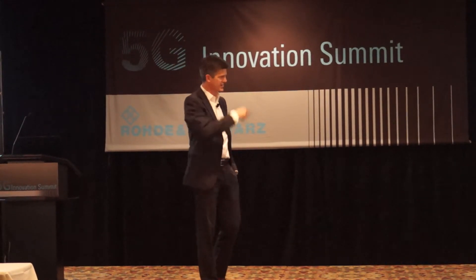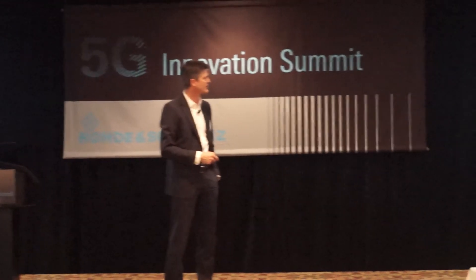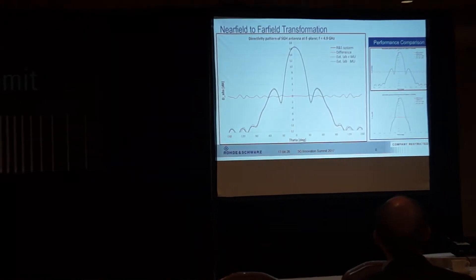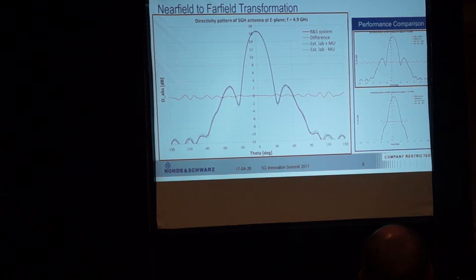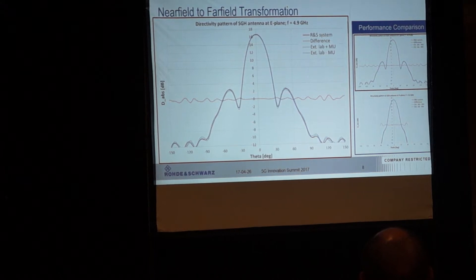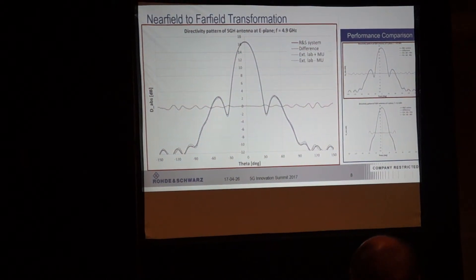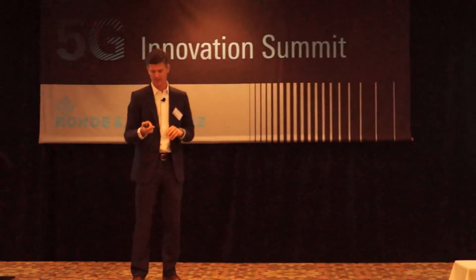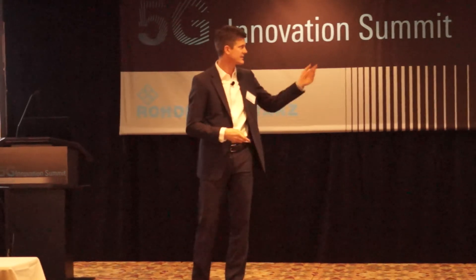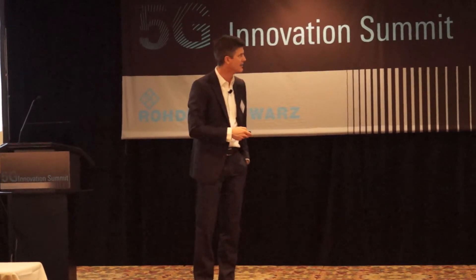The next question is: does it really work? Is it accurate enough? We have two graphs — one is the measurement with our system, using the exact same serial number device, and we measured it in a different lab in Spain at Polytechnic Madrid. We got similar results, and the difference curve is below 1 dB. That was our installation in Poland versus the one in Madrid, with different measurement equipment, different software, and different near field to far field transformation — but the same device on the test. You can see how closely these results align for the E-plane and H-plane. The frequency was 4.9 GHz.